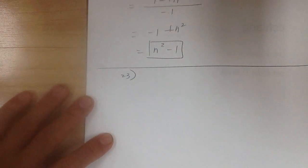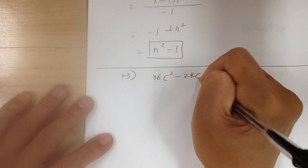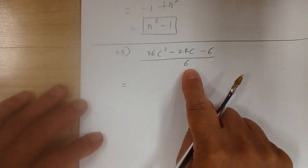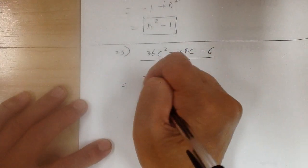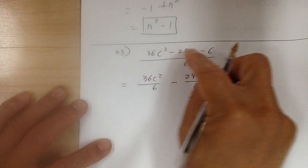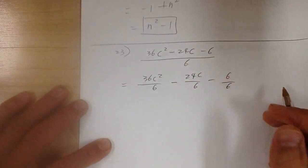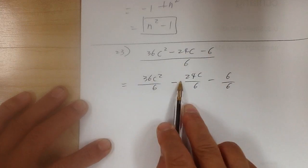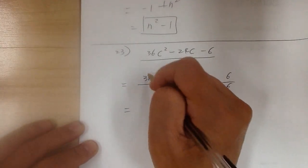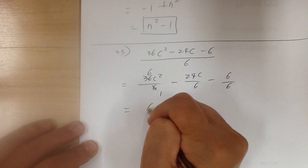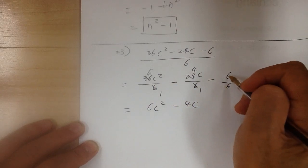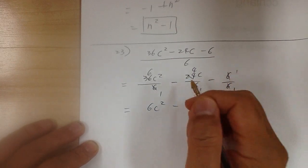Number 23. I have 36c squared minus 24c minus 6, over 6. You can use the one term on the bottom — undo the common denominator. So I make it: 36c squared over 6, minus 24c over 6, minus 6 over 6. After undoing the common denominator, simplify each term individually. 6 and 36 divided by 6: I get 1 and 6, so 6c squared. 6 and 24 divided by 6: I get 1 and 4, so minus 4c. And 6 over 6 just divides to 1, so minus 1. And that's it.